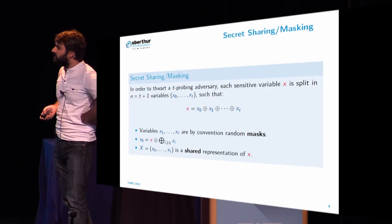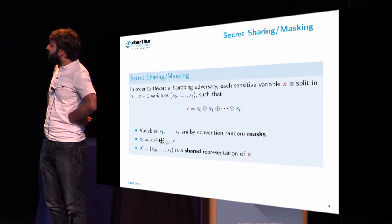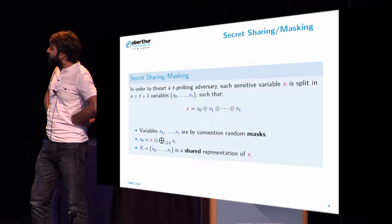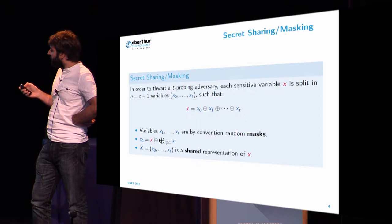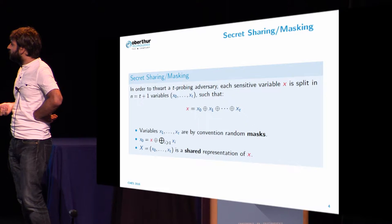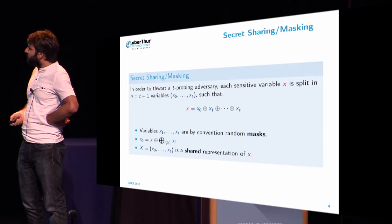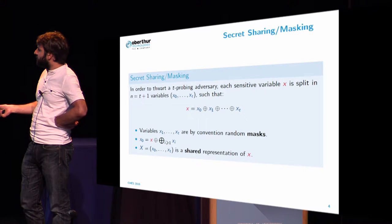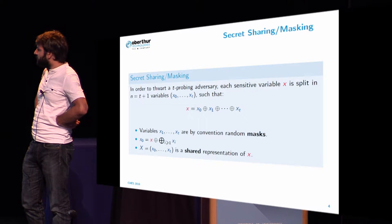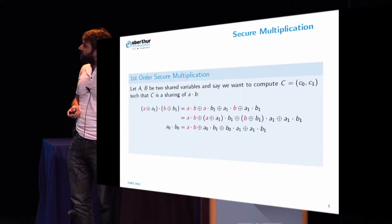So how can we defeat an attacker? We just have to exceed his power and we use secret sharing or masking to handle independently some shares in order to process securely. I will denote with capital letters shared variables, which is a vector of T plus one values, and I will put in red sensitive data in the rest of the presentation.